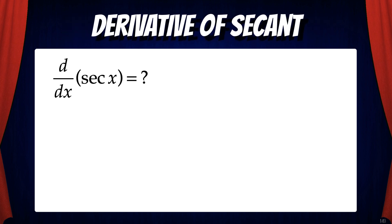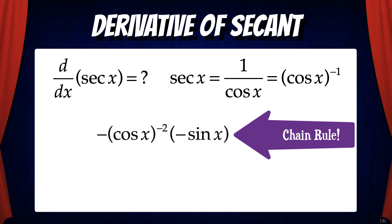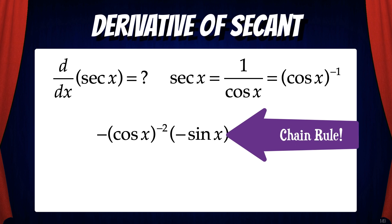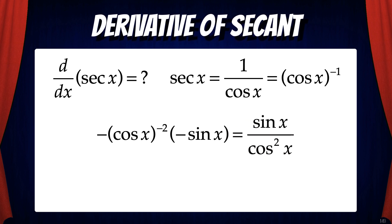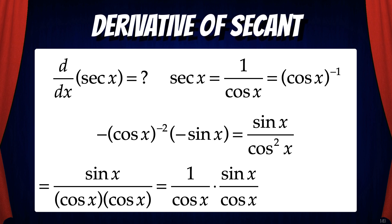Moving on — let's find the derivative of secant x. In order to do this, we're first going to rewrite secant x as 1 over cosine x. Now we could use the quotient rule, or we could rewrite 1 over cosine x as cosine x to the negative 1 power and use the chain rule. Applying the chain rule gives us negative cosine x to the minus 2 power times the derivative of the inside function, cosine x, which is negative sine x. This reduces to sine x over cosine squared x. We'll rewrite that as sine x over cosine x times cosine x, and split it into 1 over cosine x times sine x over cosine x, which is equivalent to secant x tan x.